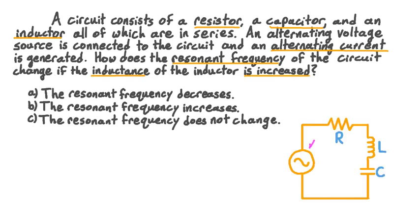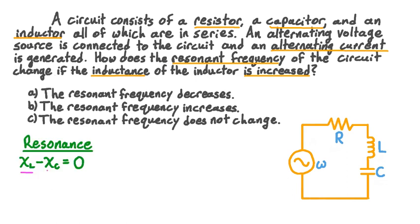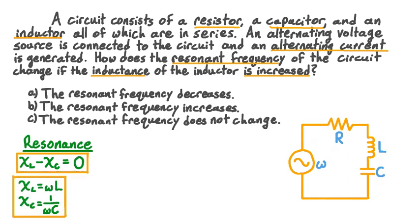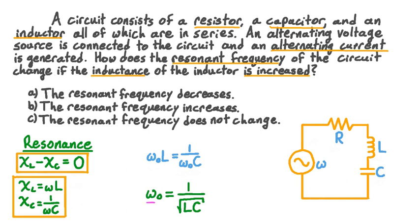Resonance occurs when the difference between inductive and capacitive reactances — the total reactance — is zero, meaning the inductive and capacitive reactances are equal. Using the formulas: inductive reactance is angular frequency times inductance, and capacitive reactance is 1 divided by angular frequency times capacitance. Equating these at the resonant frequency gives ω₀L = 1/(ω₀C). Solving for ω₀, the resonant angular frequency equals 1 divided by the square root of inductance times capacitance.